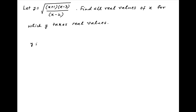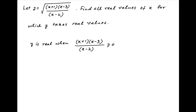y is a real number if the expression in the square root on the right-hand side is greater than or equal to 0. In other words, (x + 1)(x - 3) divided by (x - 2) must be greater than or equal to 0. Also, note that the denominator x minus 2 should not be equal to 0 for y to be real, and therefore x should not be equal to 2.